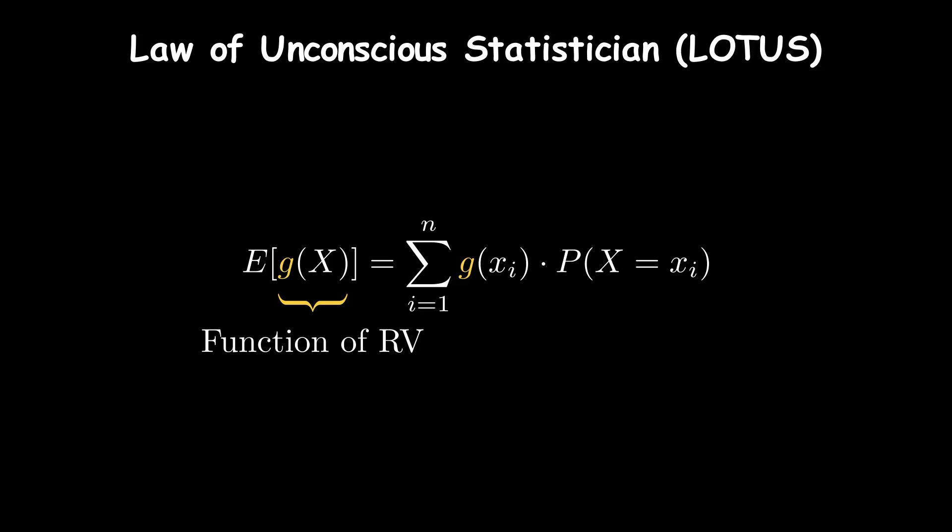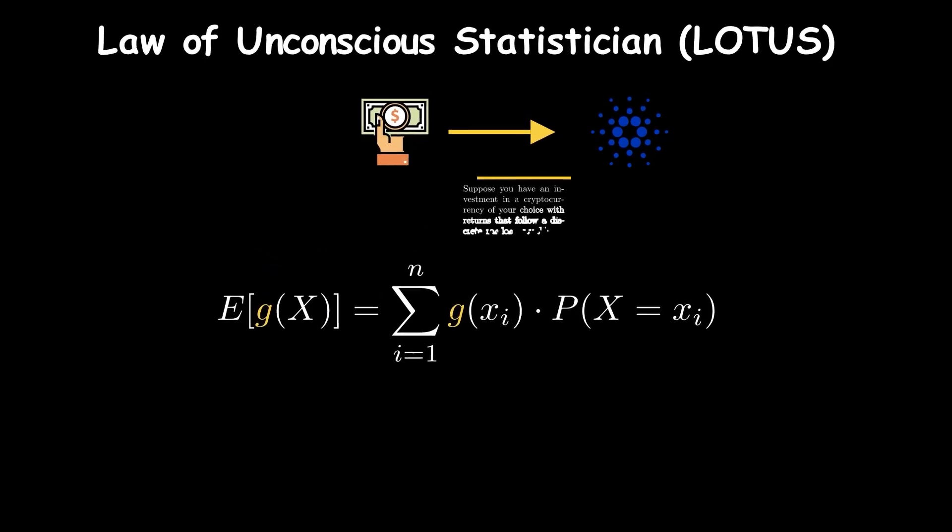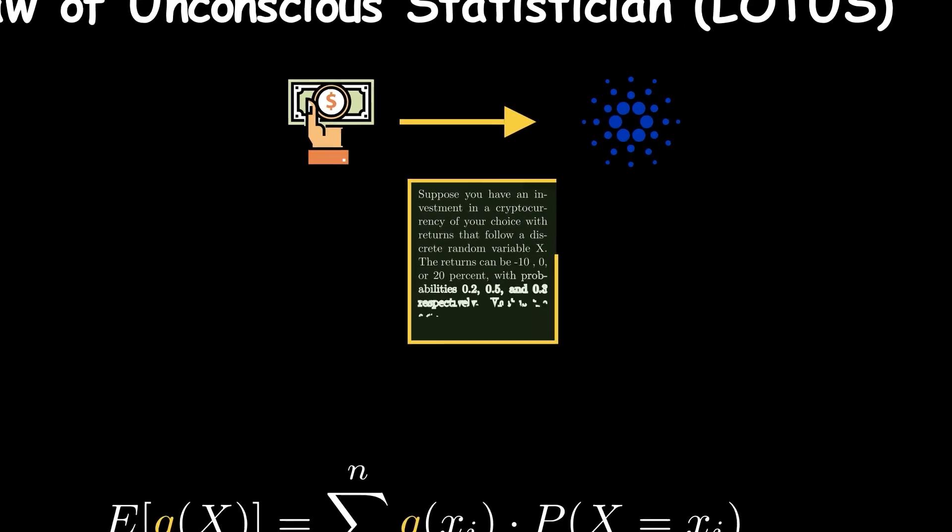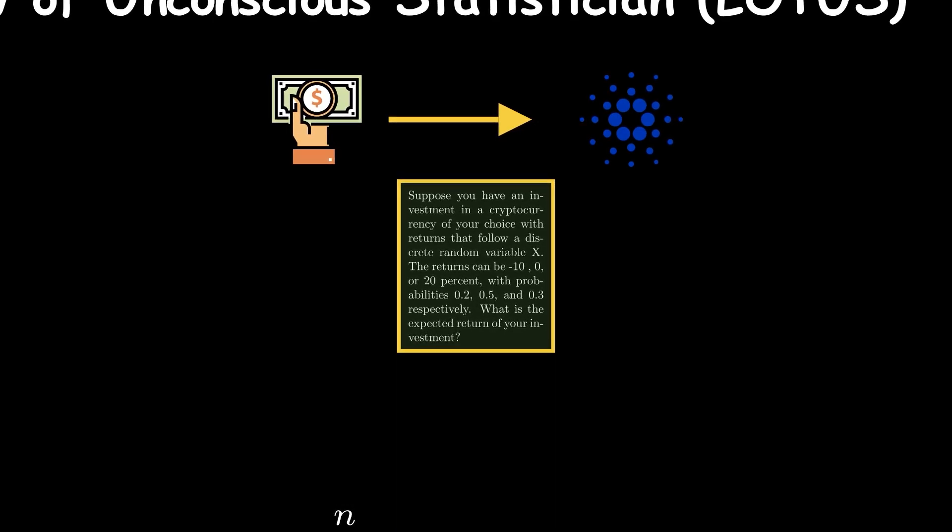Let's use a real-world use case to understand how LOTUS can be applied. Suppose you have an investment in a cryptocurrency of your choice with returns that follow a discrete random variable X. The returns can be -10%, 0%, or 20% with probabilities 0.2, 0.5, and 0.3 respectively.